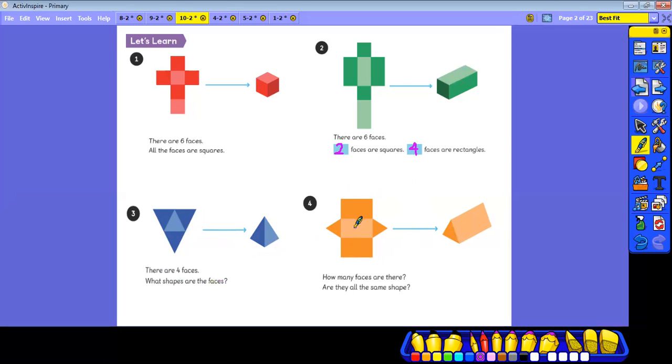And this last one here. How many faces are there? 1, 2, 3, 4, 5 faces. Are they all the same shape? No, they're not. We've got one, two triangles, and one, two, three rectangles to make our prism shape. Let's move on.